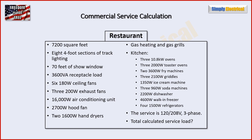Here is our example. We have a restaurant — 7,200 square feet. We've got some lighting track, some show window lighting, a receptacle load given to us, some ceiling fans, exhaust fans, an air conditioning unit, a hood fan, and some hand dryers. Our heating is gas — that's important — and our grills are gas as well. Then we have our kitchen equipment, which we'll get to as we put it into the calculation. Our service is going to be 120/208 volt three-phase, and we're going to find our total calculated service load.